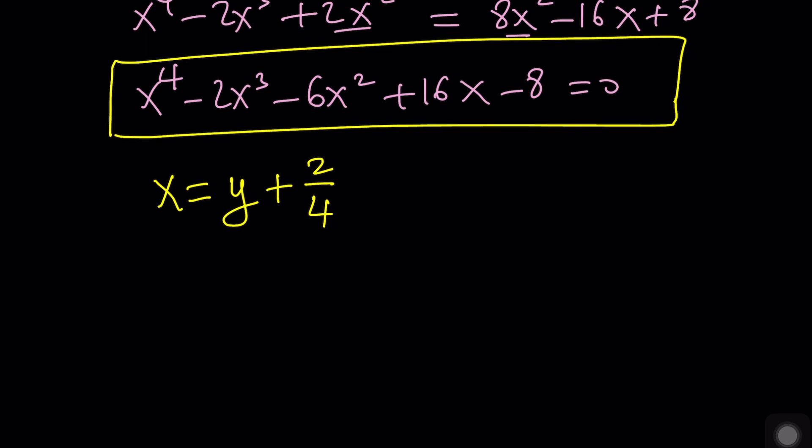you will get rid of the cubic term. You're going to get a polynomial in y with y to the fourth, but there will not be any y cubed. And once you get that, suppose you've got something like this. Let's say y to the fourth plus a y squared plus b y plus c. Notice that the y cubed is missing.